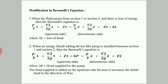The modifications to Bernoulli's equation are as follows. When fluid passes from section 1 to section 2 with loss of energy, the equation becomes: P1/γ + V1²/2g + Z1 = P2/γ + V2²/2g + Z2 + loss of head. When an energy head is added by a pump between sections 1 and 2, the equation becomes: P1/γ + V1²/2g + Z1 + head supplied by pump = P2/γ + V2²/2g + Z2.